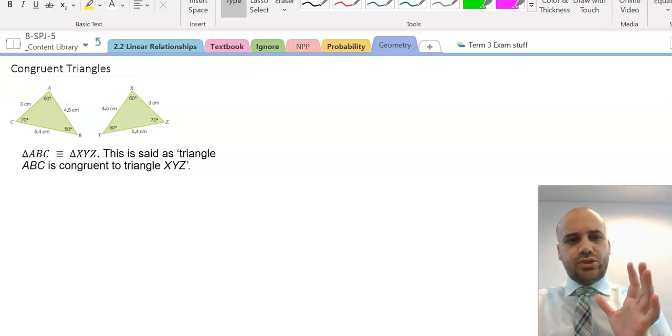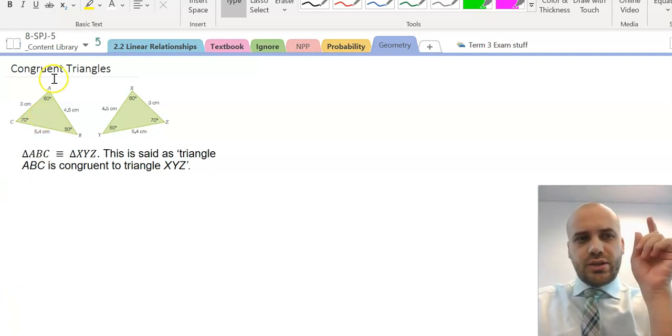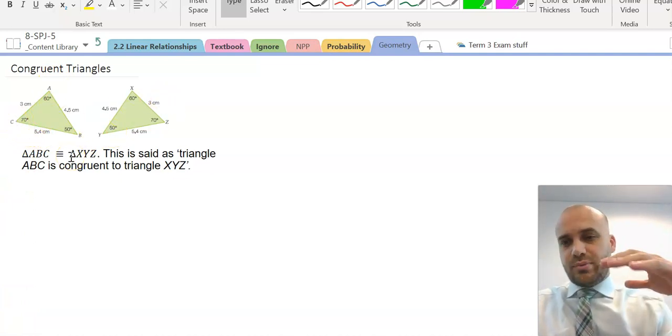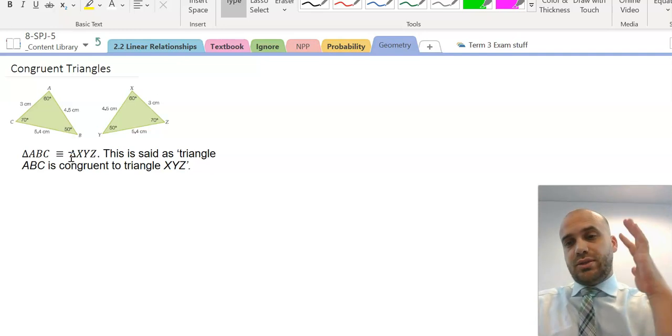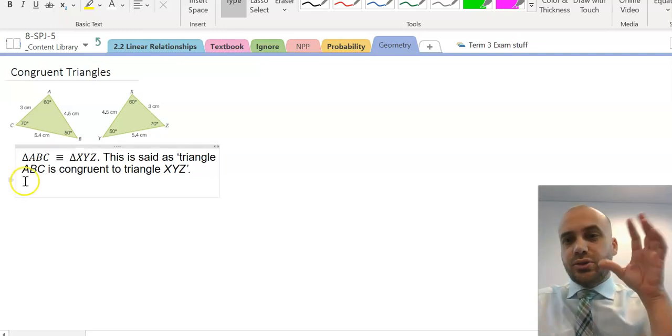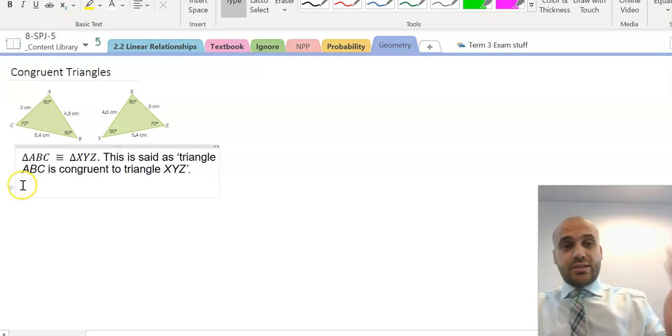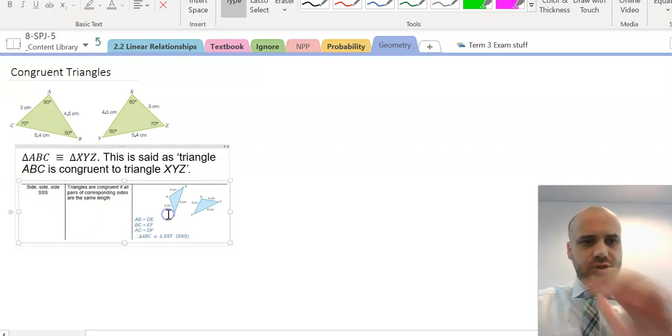The first one is really straightforward. If you know the lengths of all three sides match up, that's enough information. You don't need to know anything about the angles at all. This is called the side-side-side test, the SSS test. So, let's zoom in on that.